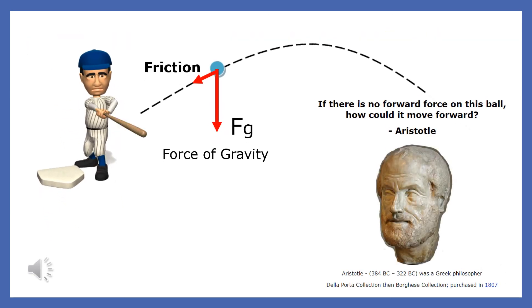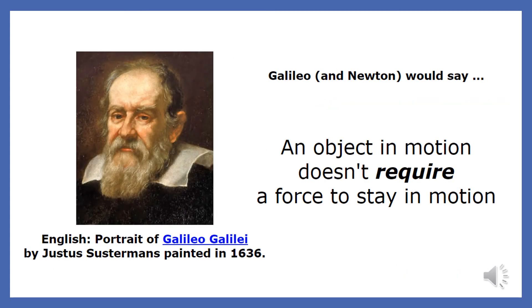Now you might be wondering how the ball is able to move forward if there's no forward force on the ball. Some actually mistakenly think that there should be an arrow on the ball that represents the bat's force on the ball. Galileo and Newton would explain that an object in motion does not require a force to stay in motion. A net force is needed to change motion, not to maintain motion.